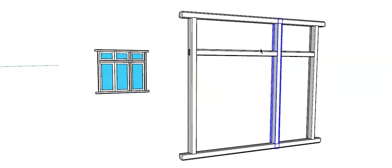The mullion divides the total window into two parts horizontally, while the transom divides the window into top and bottom parts vertically.